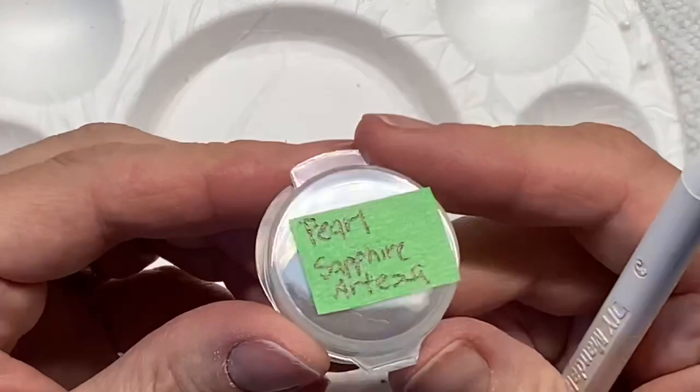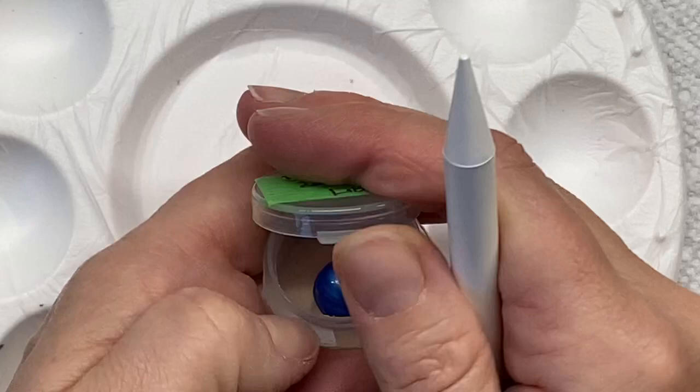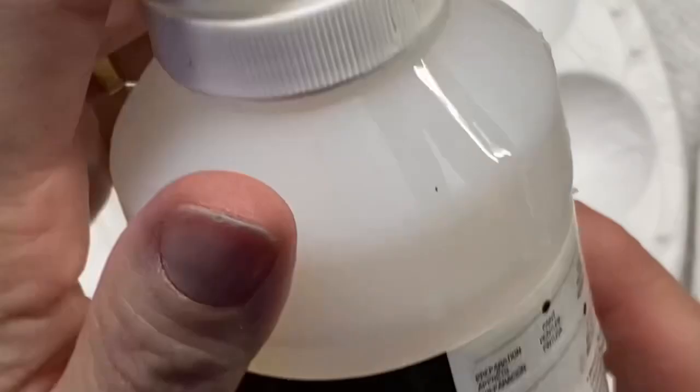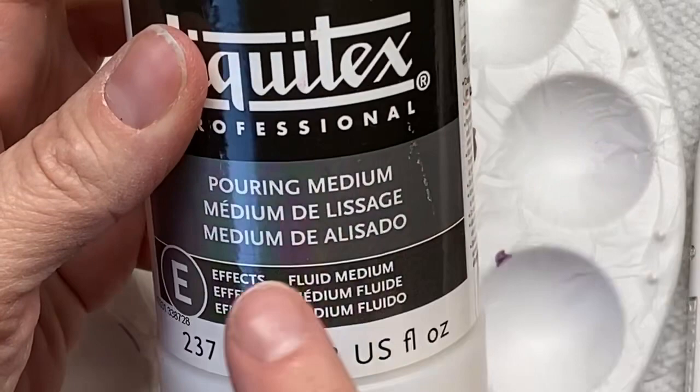They are heavy bodied paints, so you'll see in the container here I just squeezed some out and it looks just like a little lump. For any dotters, you know that's just gonna leave some nasty little peaks.